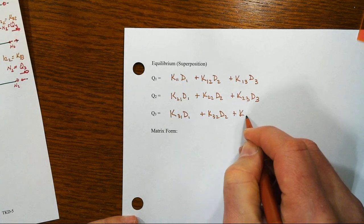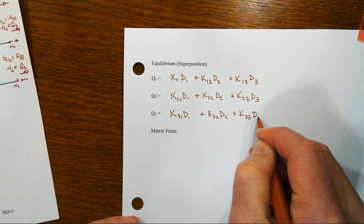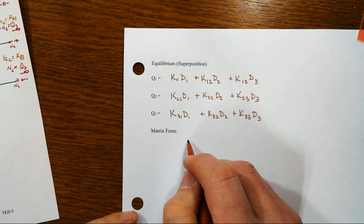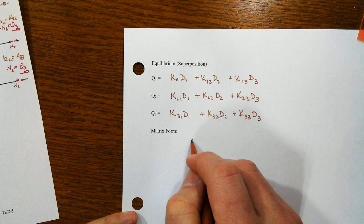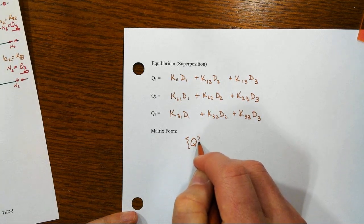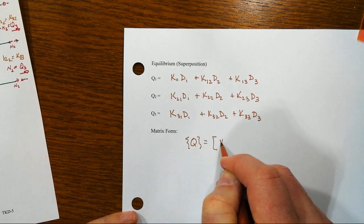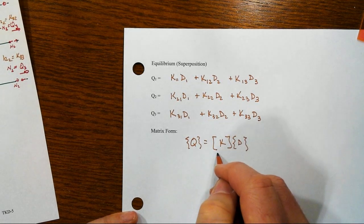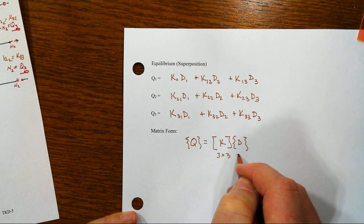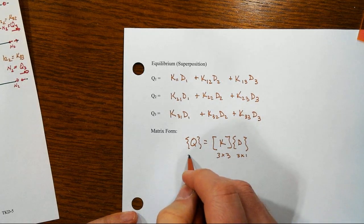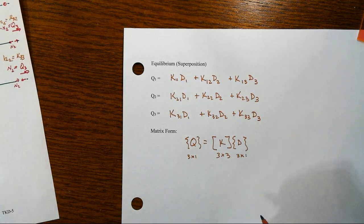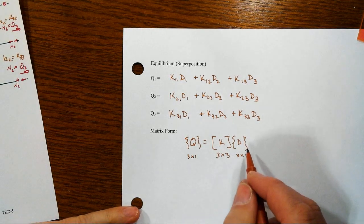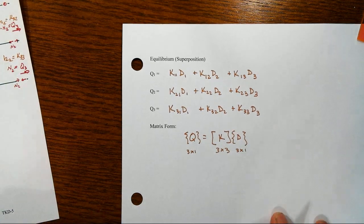So in the stiffness method, we are writing equilibrium equations where the unknowns are these displacements. Now, in general, you'd say that you could write this as our nodal forces equal then our stiffness matrix times our displacement vector. In this case, that's 3 by 3 for the stiffness matrix, 3 by 1 for each of the two vectors, the force vector and the displacement vector.